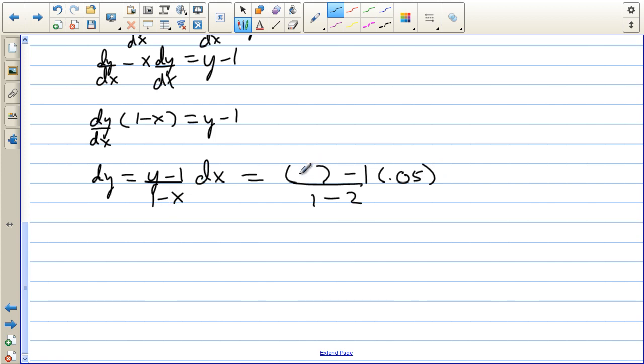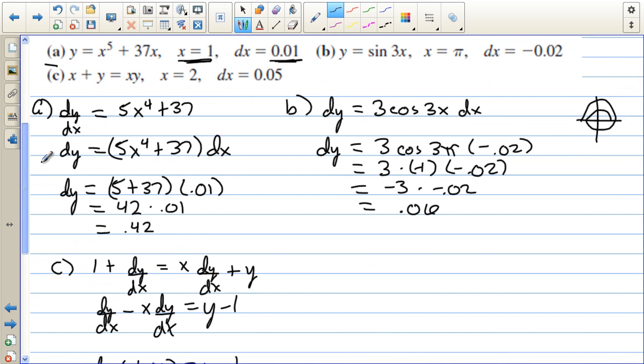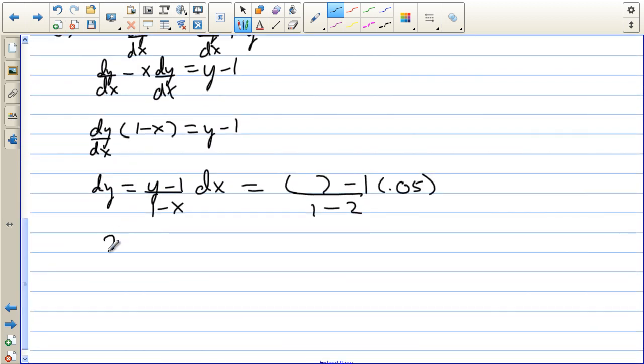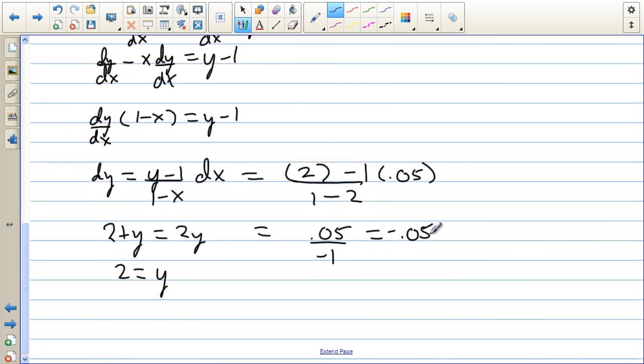Now I just need to find this y value. Well, the original function is x + y = xy, where x is 2. So 2 + y equals 2y. So 2 equals y. So we have 2 for the y as well. So that equals 1/(1 - 2) times 0.05. So we have 0.05 over -1. So the differential, the value of the differential y is -0.05. So when x changes 0.05, y changes -0.05.